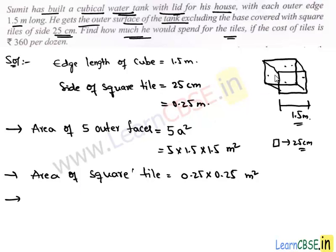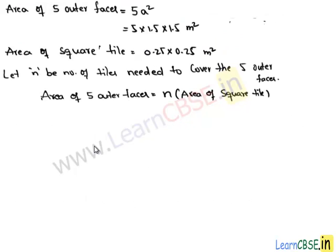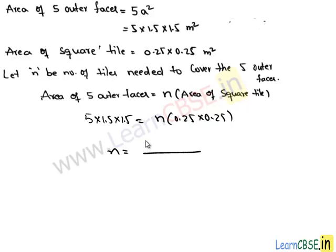We don't know how many tiles are needed, so we assume n is the number of tiles needed to cover the 5 outer surfaces. Then the area of 5 faces must equal n times the area of each tile. Substituting values: 5 × 1.5 × 1.5 = n × 0.25 × 0.25. Transposing, n = (5 × 1.5 × 1.5) / (0.25²) = 180. So 180 tiles are needed to cover the 5 outer faces.